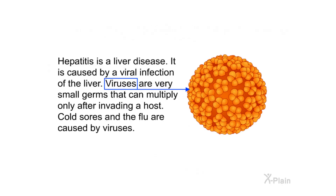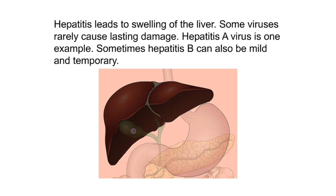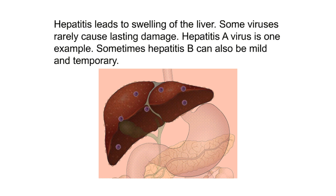Hepatitis is a liver disease caused by a viral infection of the liver. Viruses are very small germs that can multiply only after invading a host — cold sores and the flu are caused by viruses. There are many viruses that can cause hepatitis, such as hepatitis A, hepatitis B, and hepatitis C virus. Hepatitis leads to swelling of the liver. Some viruses, like hepatitis A, rarely cause lasting damage, and sometimes hepatitis B can also be mild and temporary.